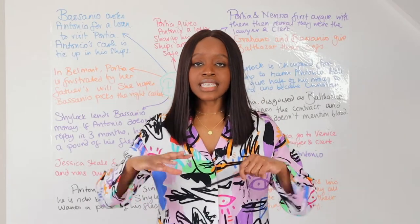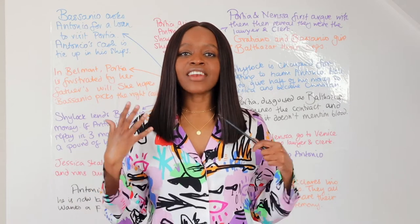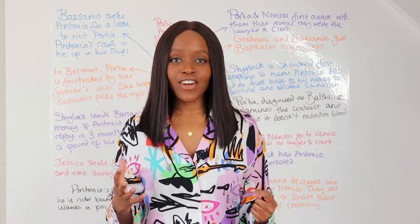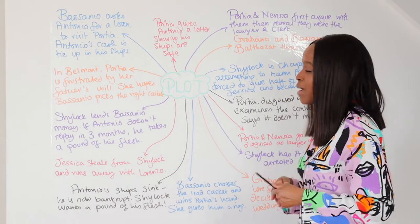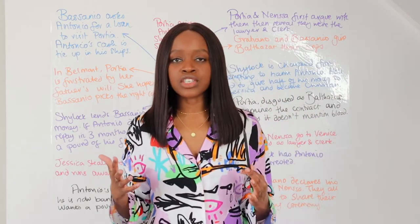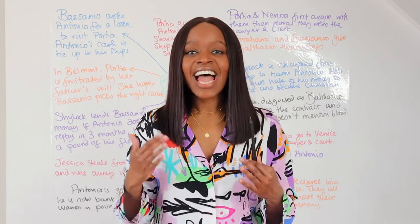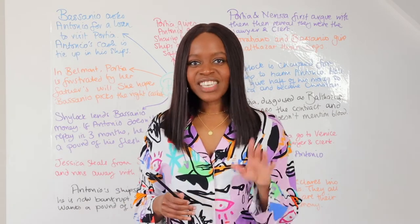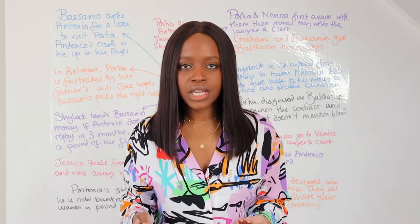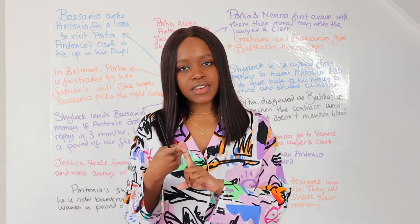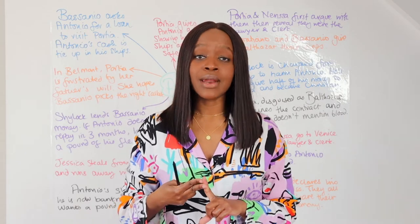Let's begin by examining this entire play — all five acts and all the key events — in a nutshell. As you can see behind me, I've created a mind map of all the major events that you need to understand and the key issues that happen within the play. Bear in mind that there are two major locations explored in this play: the main location, which is Venice, and also where Portia lives, which is in Belmont.